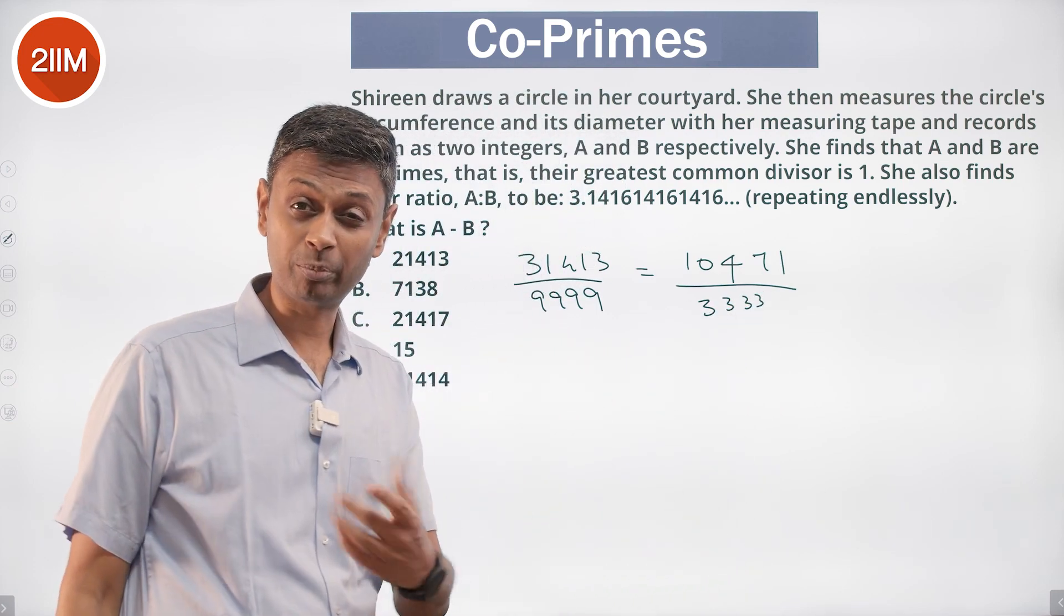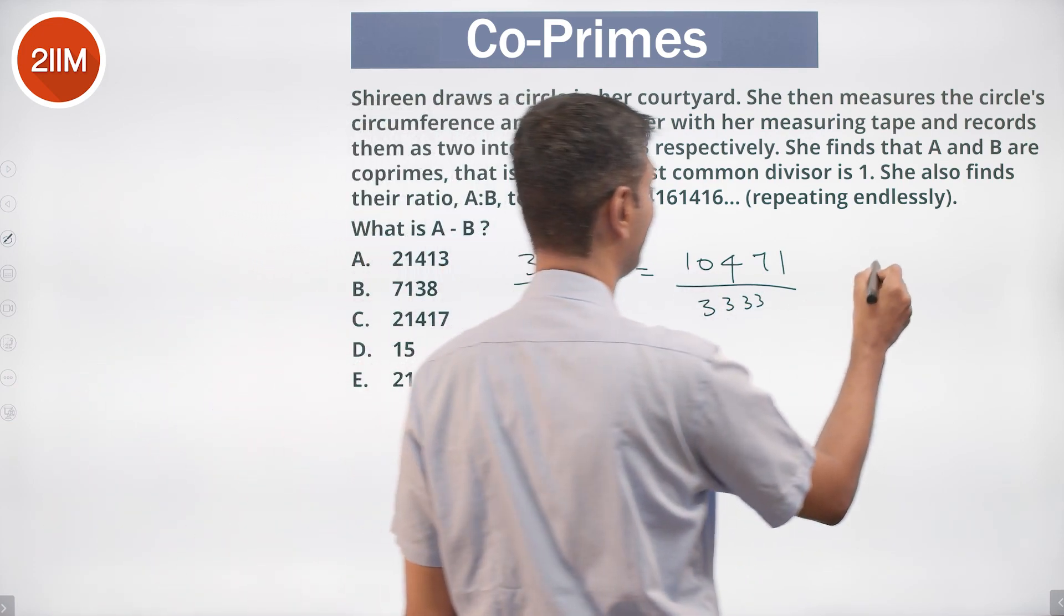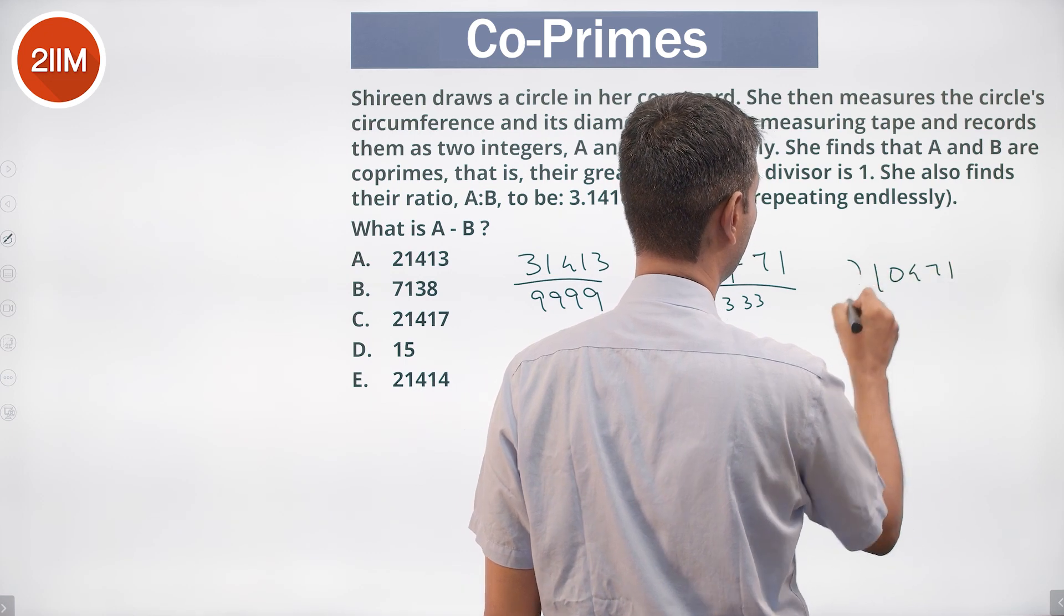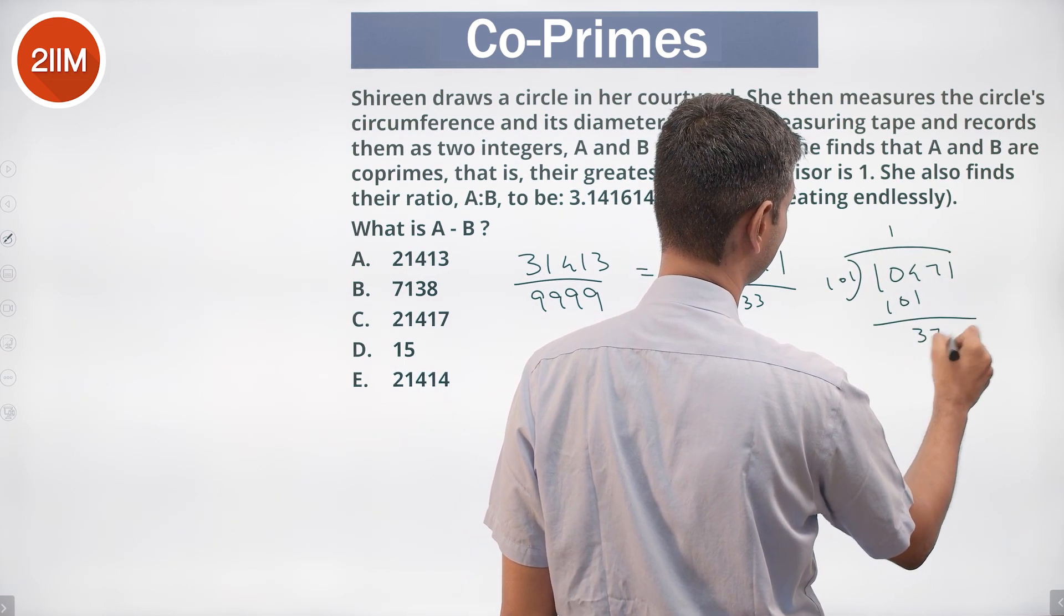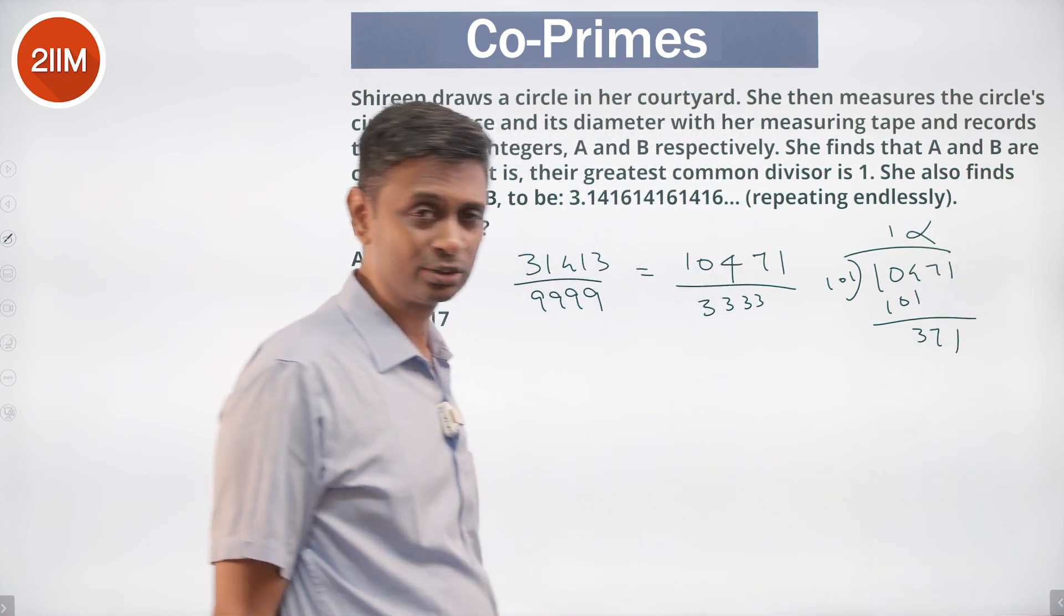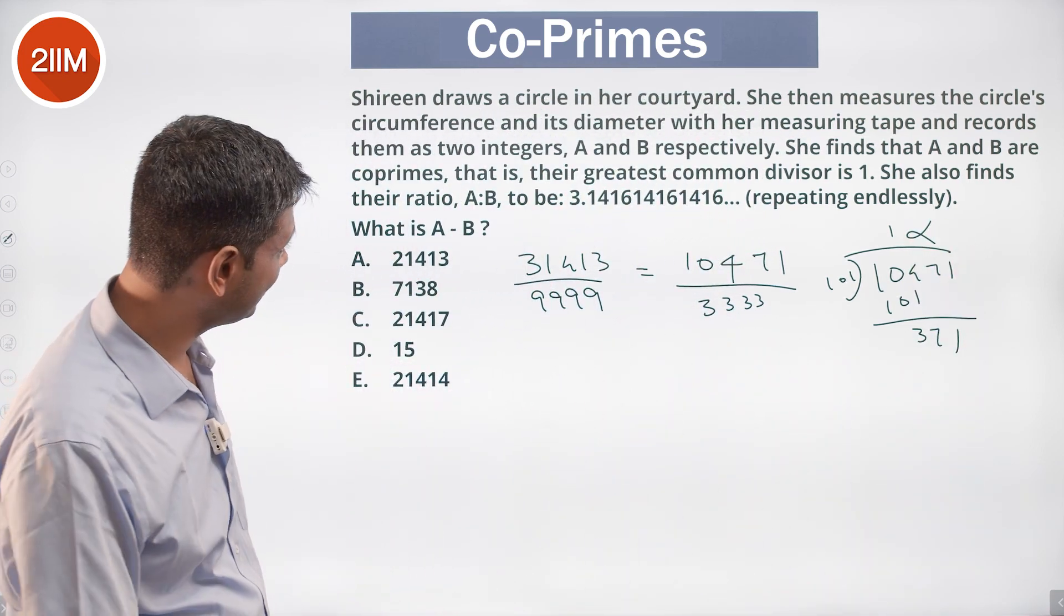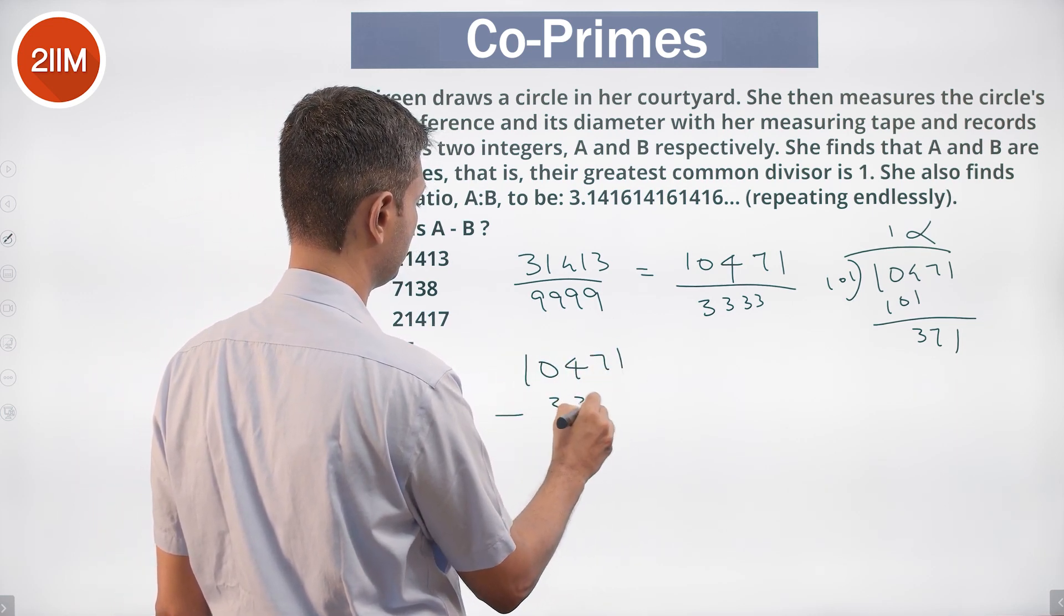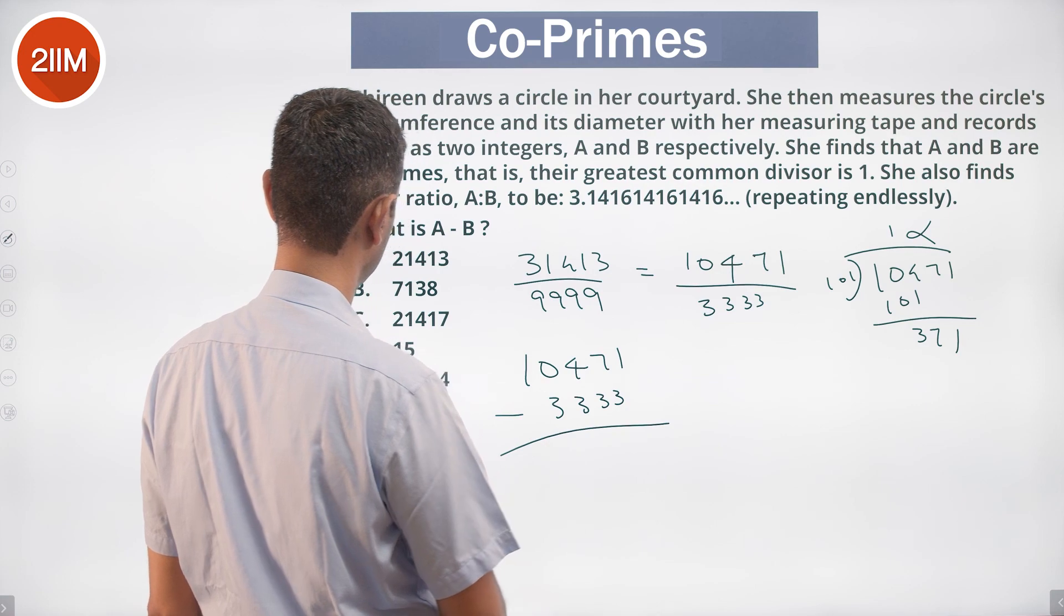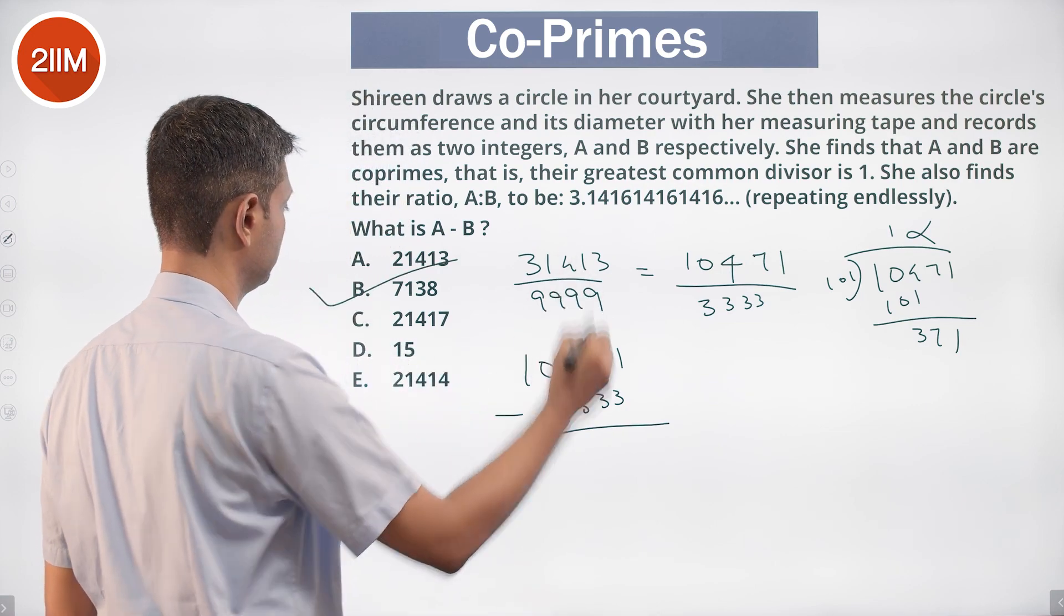Take this 10471, divide this by 101 and check that. Doesn't work. So these two are co-prime. That's our answer, and there is to be A minus B which is 10471 minus 3333, 7000 something done.